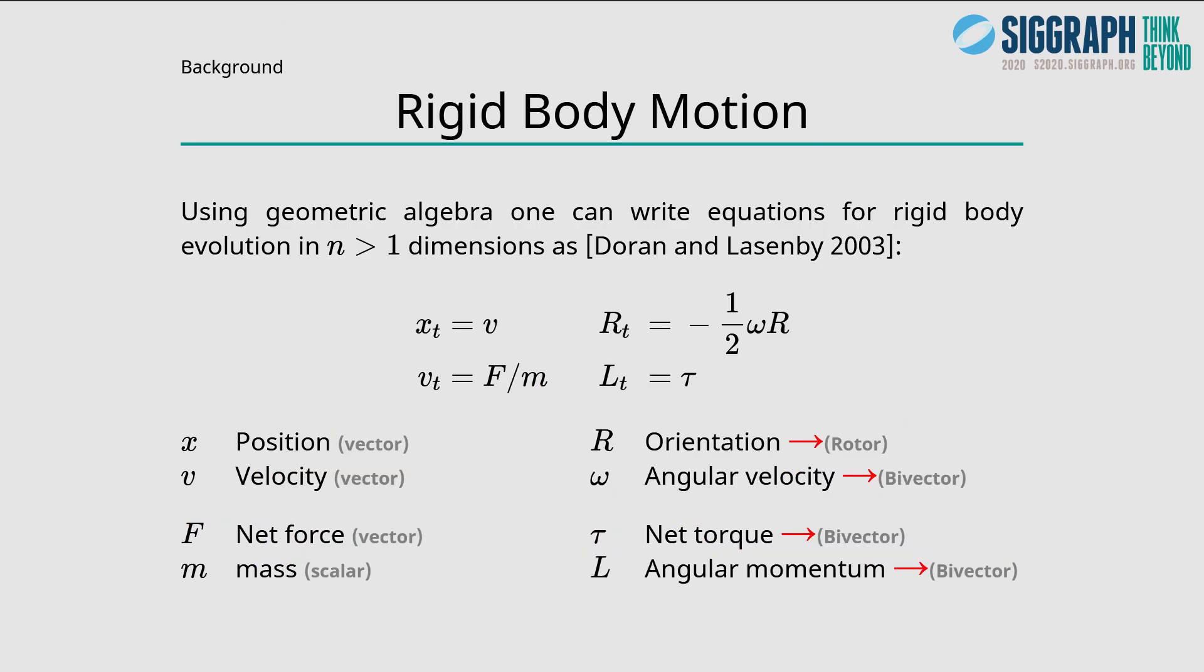These are the equations of motion. As you can see, they are mostly the same as you would expect, except that instead of a quaternion you have a rotor, and angular velocity, torque, and angular momentum are all represented using bi-vectors instead of vectors.